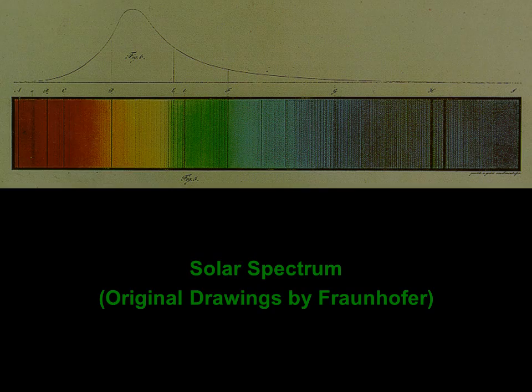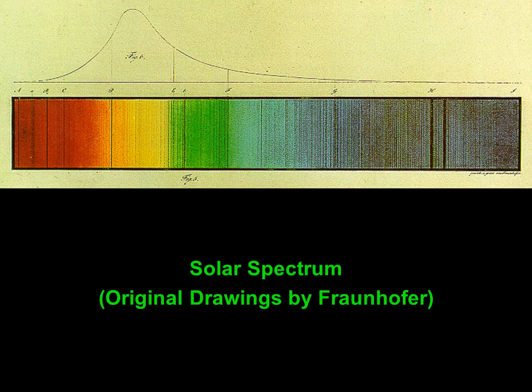Here is the solar spectrum, with the original drawing by Joseph von Fraunhofer — an optician, mostly self-taught, who invented the spectroscope in 1814 and died at age 39 in 1826. The Fraunhofer lines are named for him. You can see the peak on the graph corresponds to the yellows and greens in the solar spectrum — the wavelengths the sun most strongly emits, and by a curious coincidence, the wavelengths to which our eyes are most adapted.